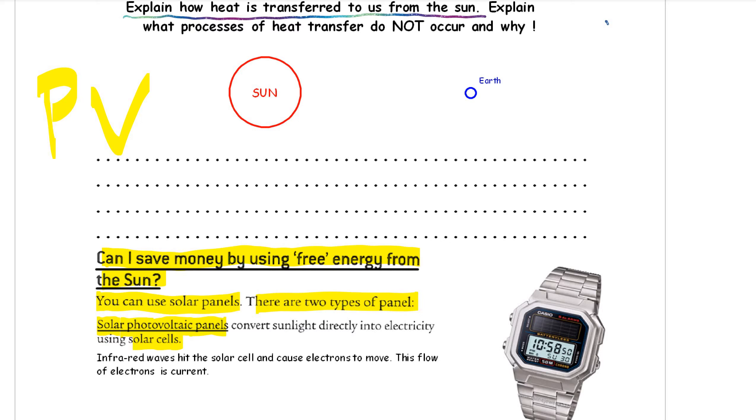And what it does is it converts sunlight directly into electricity. In fact, what happens is infrared waves hit the solar cell. I'm going to send an infrared heat wave from the sun. And it's directly going to hit this solar cell. This PV cell on this watch. And infrared waves hit the solar cell. And they cause electrons to move. And from the first booklet that we looked at, this flow of electrons is electric current. So, you're converting infrared heat energy into the movement of electrons, which is electricity.